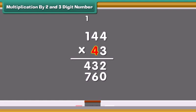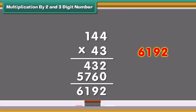Write 7 in the hundredth place and carry the one forward to the thousands. Multiply 4 with the number 1 on hundreds and add 1 which was carried forward. Write 5 in the thousands place. Now add the two values. We get 6192. So 144 multiplied by 43 is 6192.